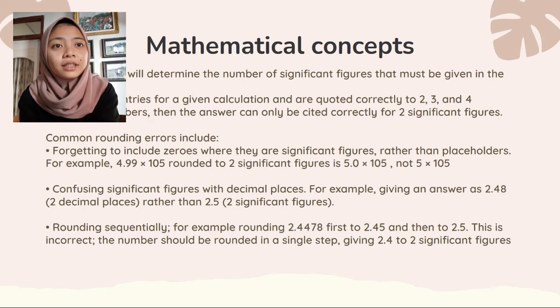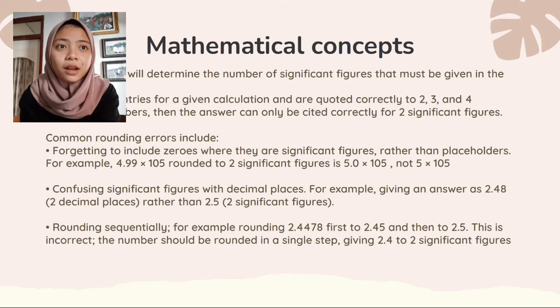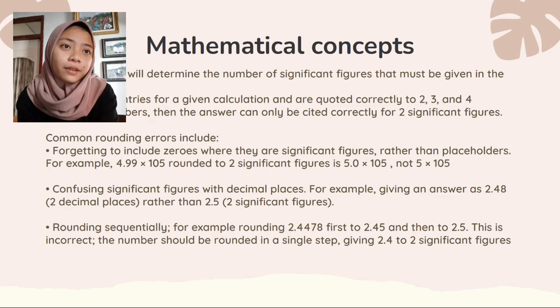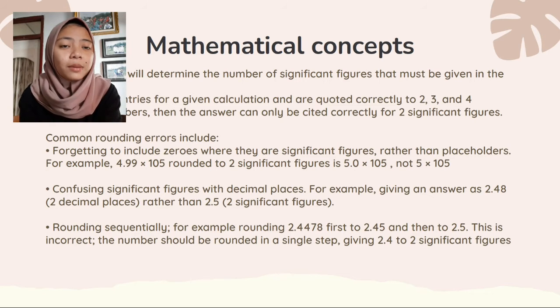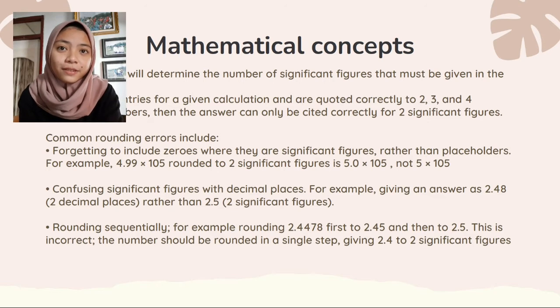The last is rounding sequentially. For example, rounding 2.4478 first to 2.45 and then to 2.5. This is incorrect. The number should be rounded in a single step, giving 2.4 to two significant figures.